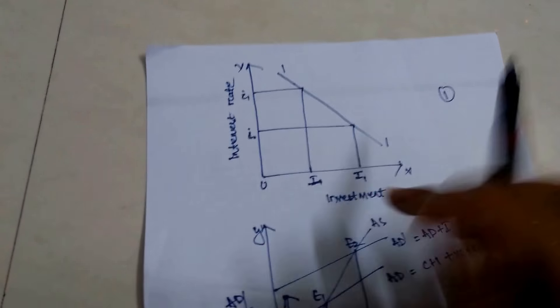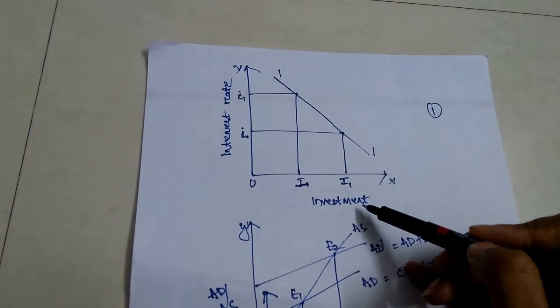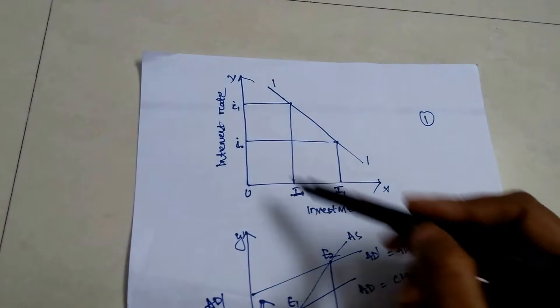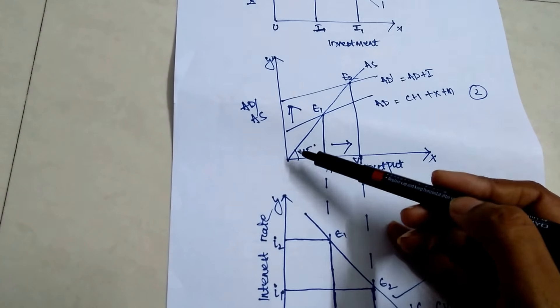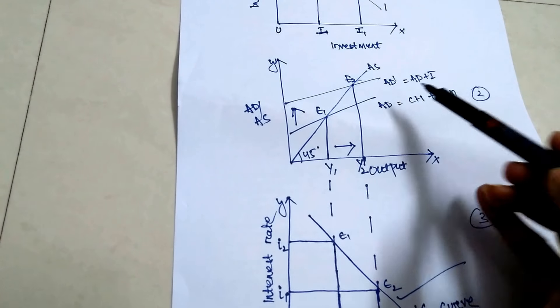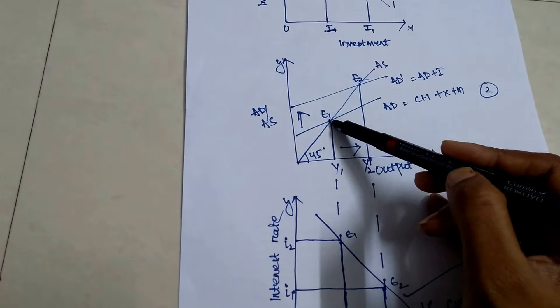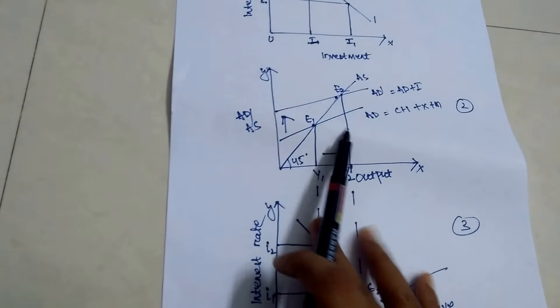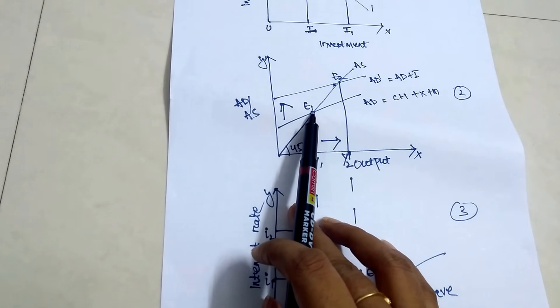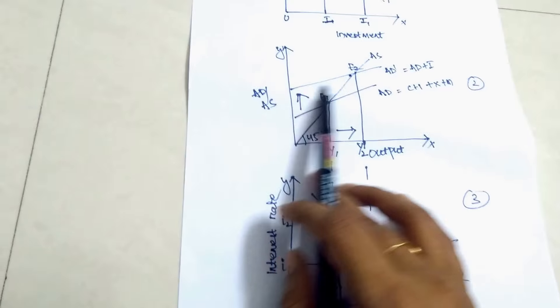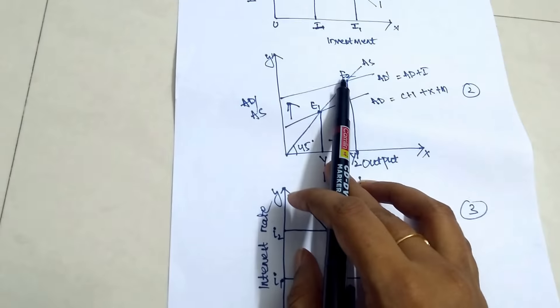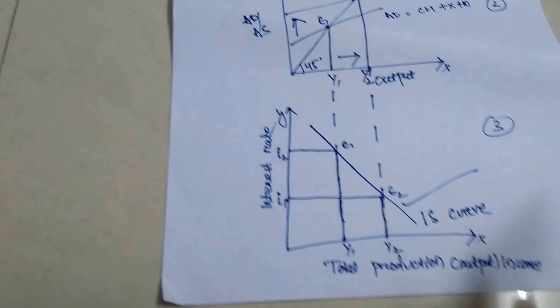In this diagram, when interest rate is high, investment is low; when interest rate is low, investment is high. The relationship between aggregate demand and aggregate supply changes accordingly. We can see equilibrium point one and equilibrium point two, where the aggregate demand curve crosses the aggregate supply curve at different points corresponding to different interest rates.